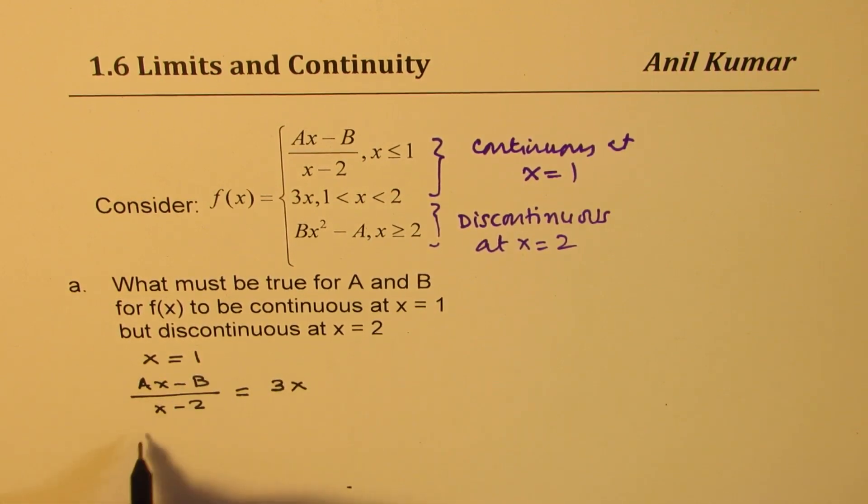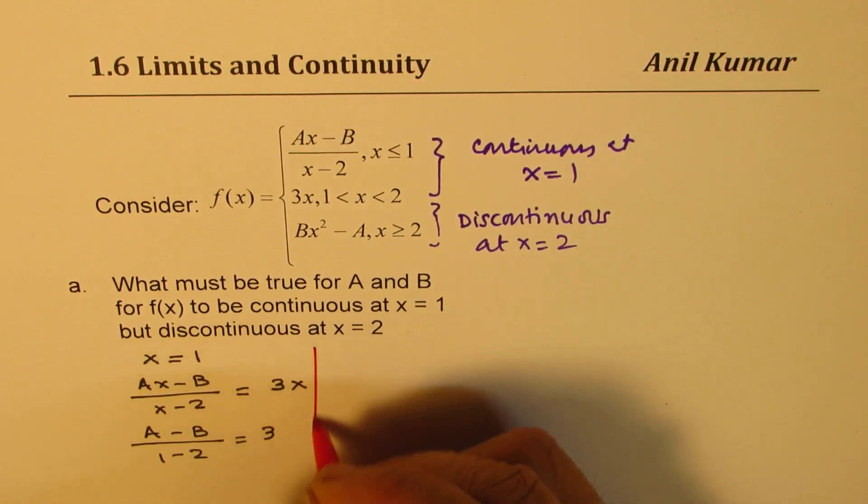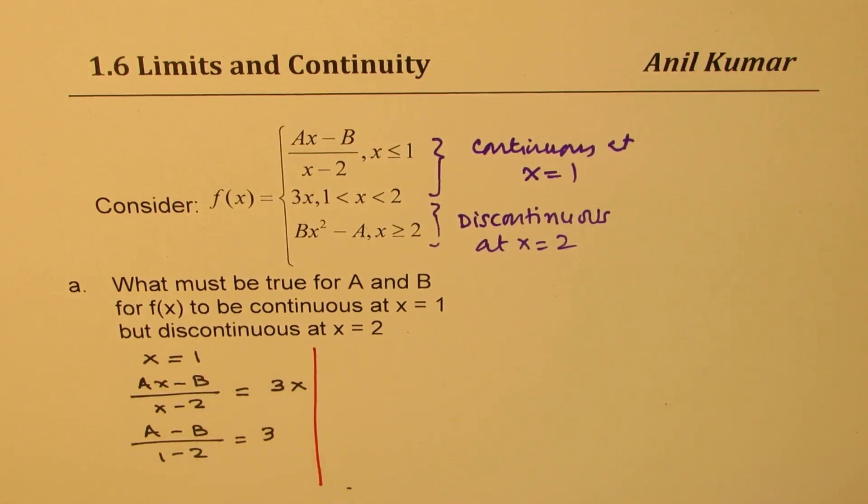Substituting 1 here we get A minus B over 1 minus 2 should equal 3, since x is 1.